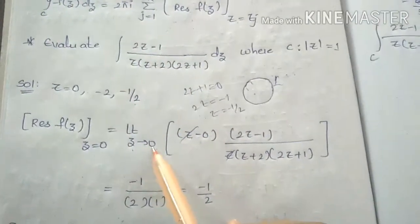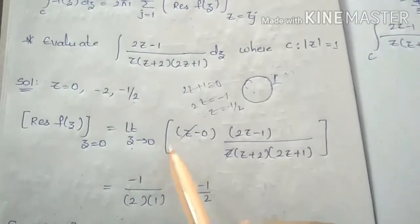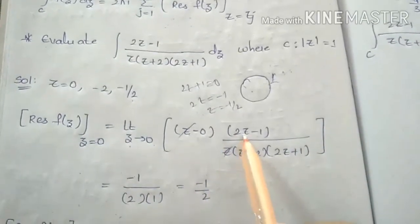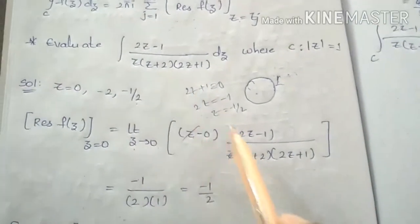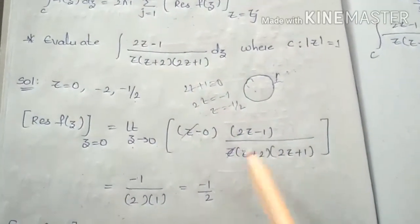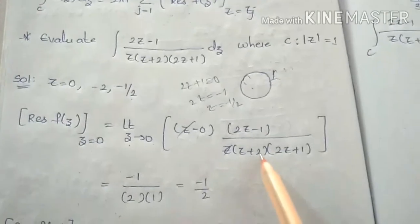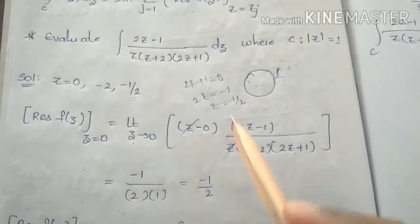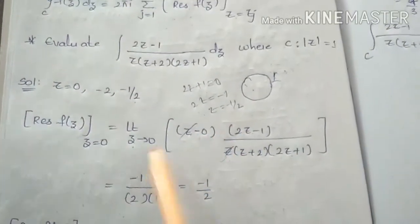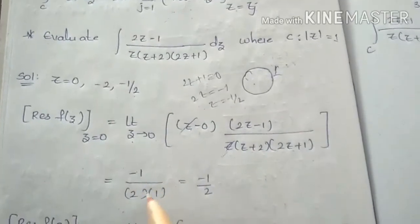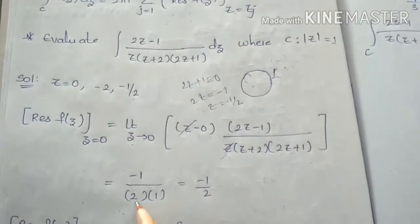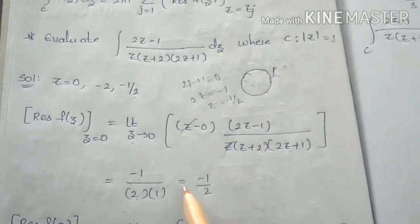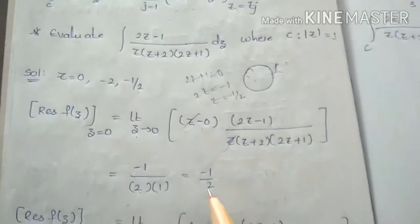Using the limit as z tends to 0 of z minus 0 times f(z), we substitute f(z) equals (2z minus 1) divided by [z(z plus 2)(2z plus 1)]. The z cancels. Substituting z equals 0 gives minus 1 divided by [2 times 1], equals minus 1 by 2.